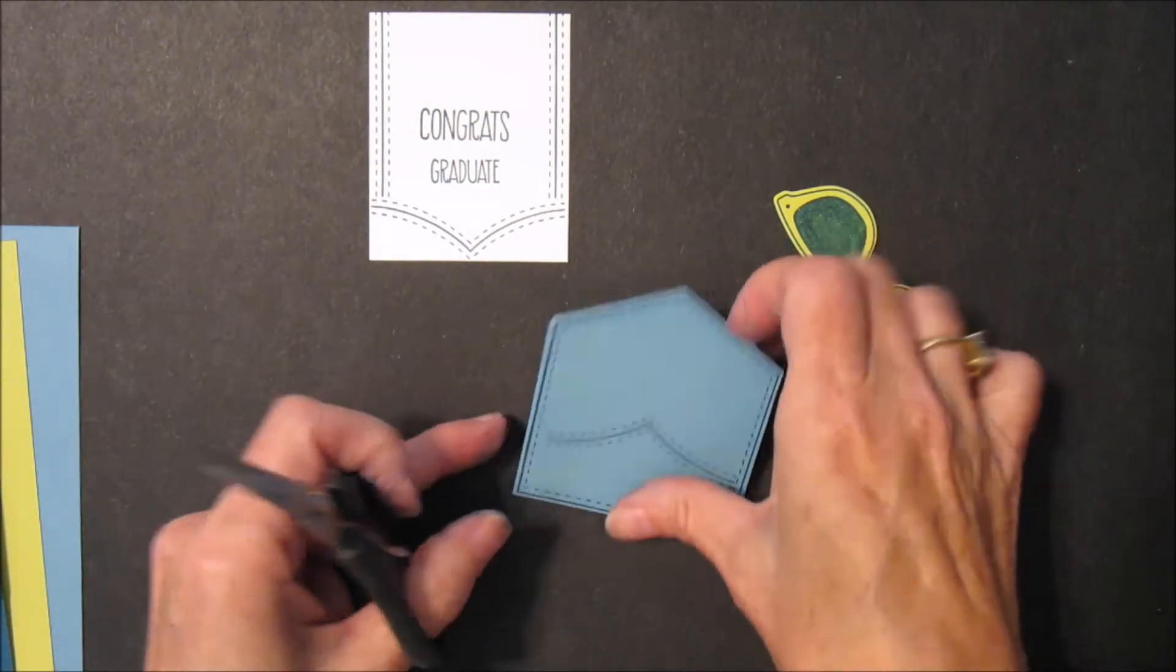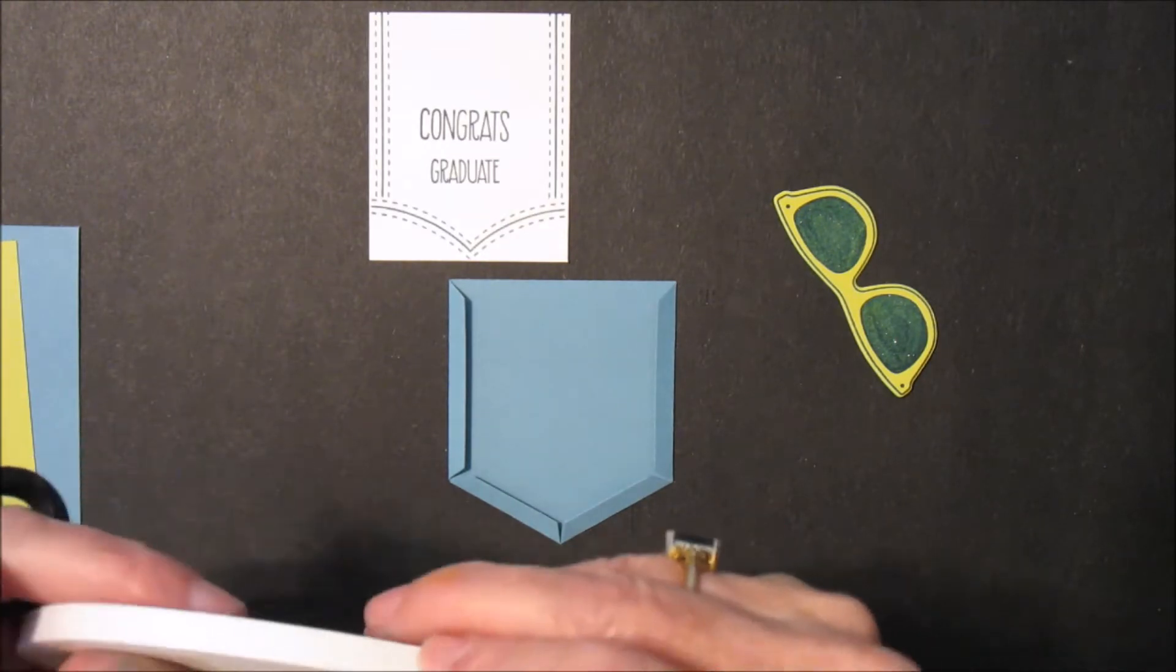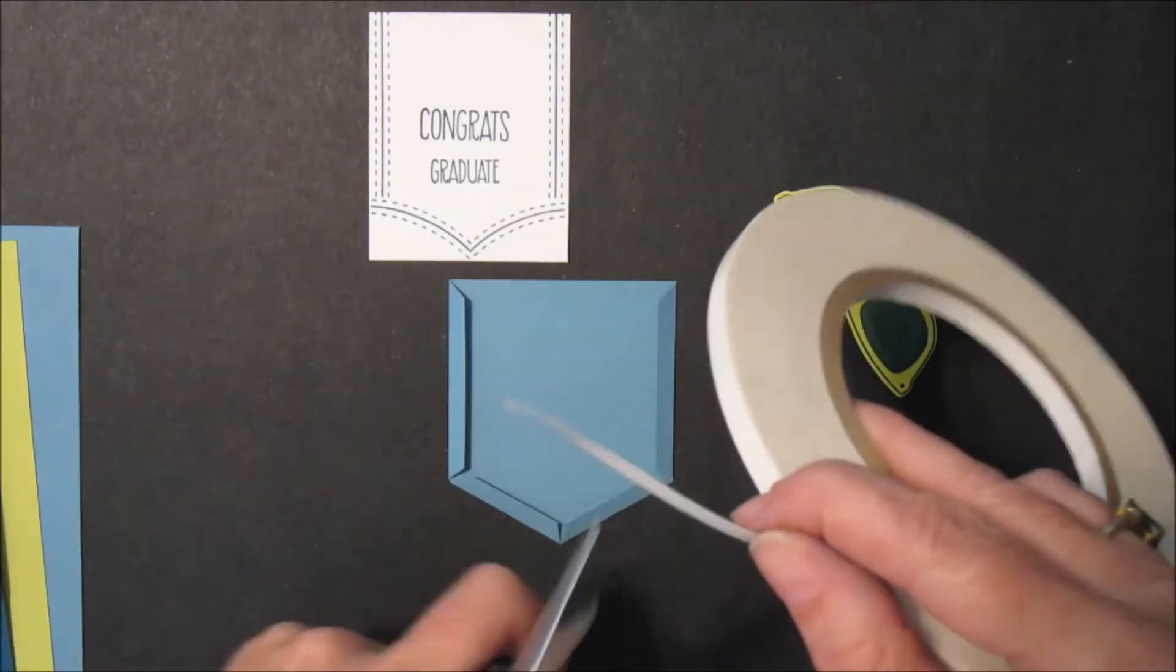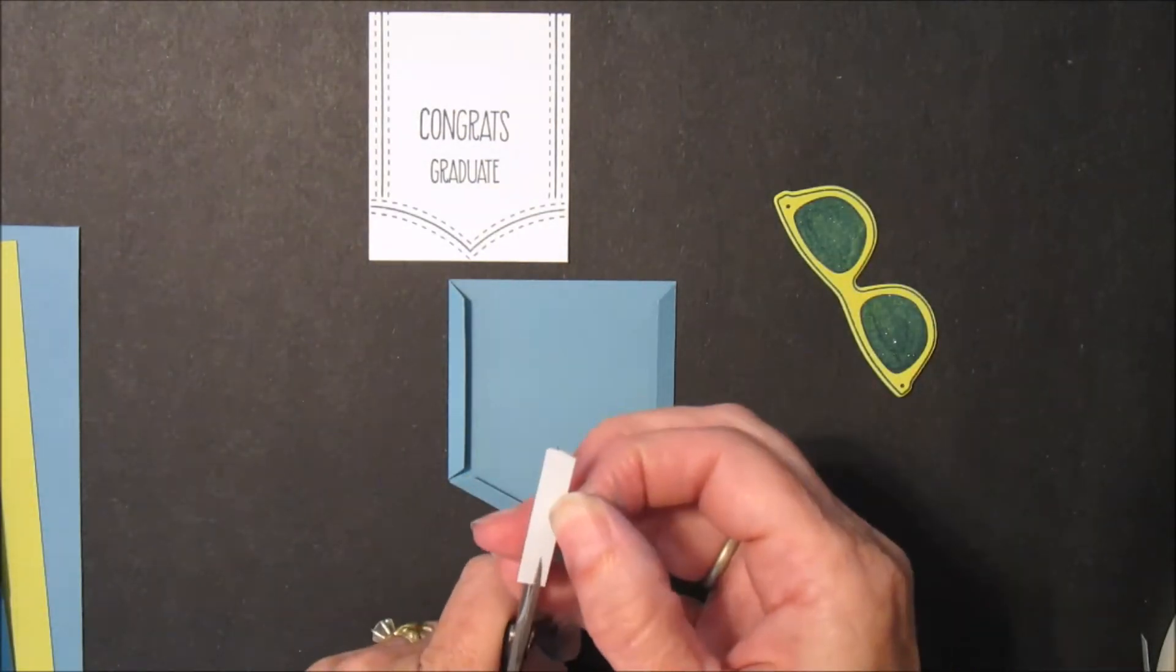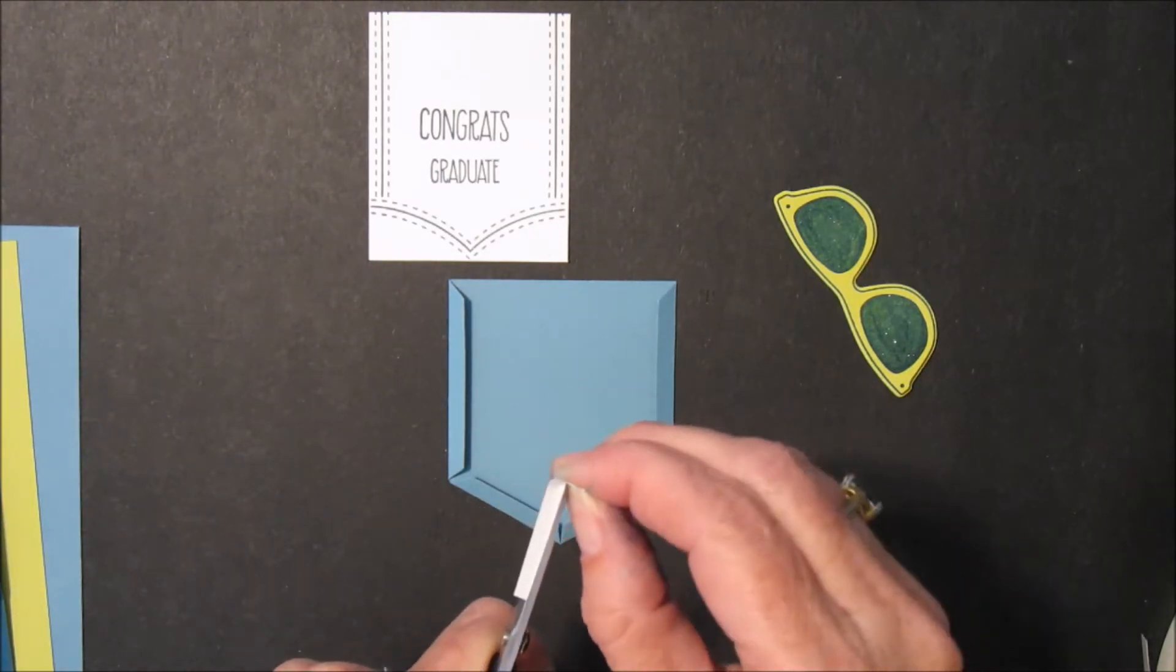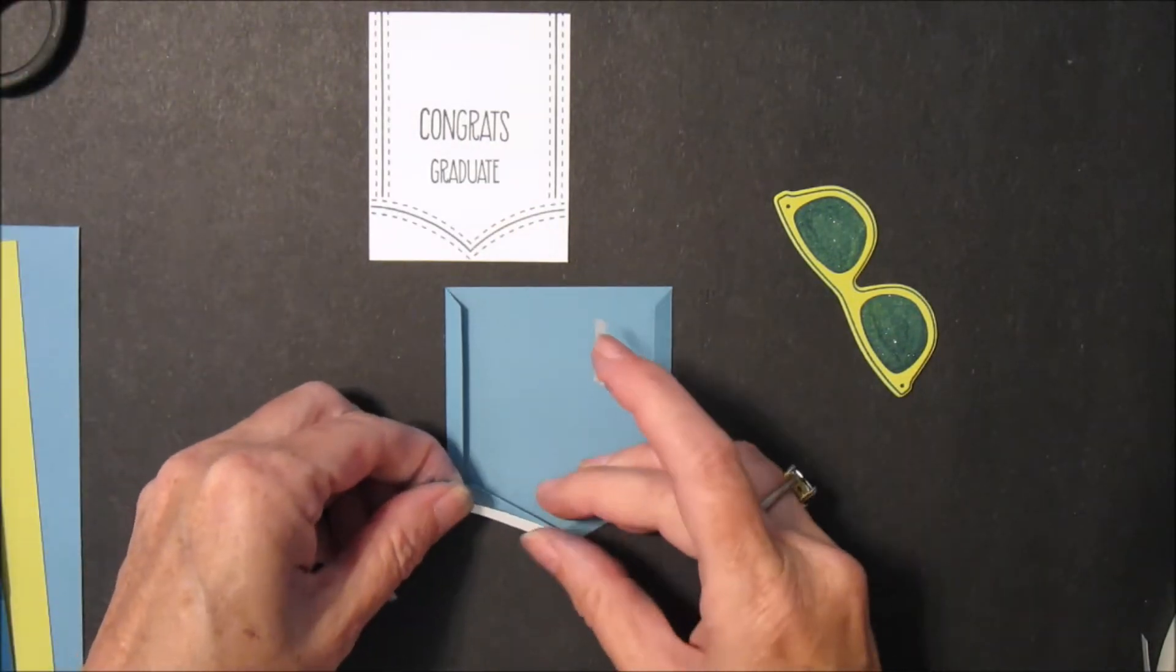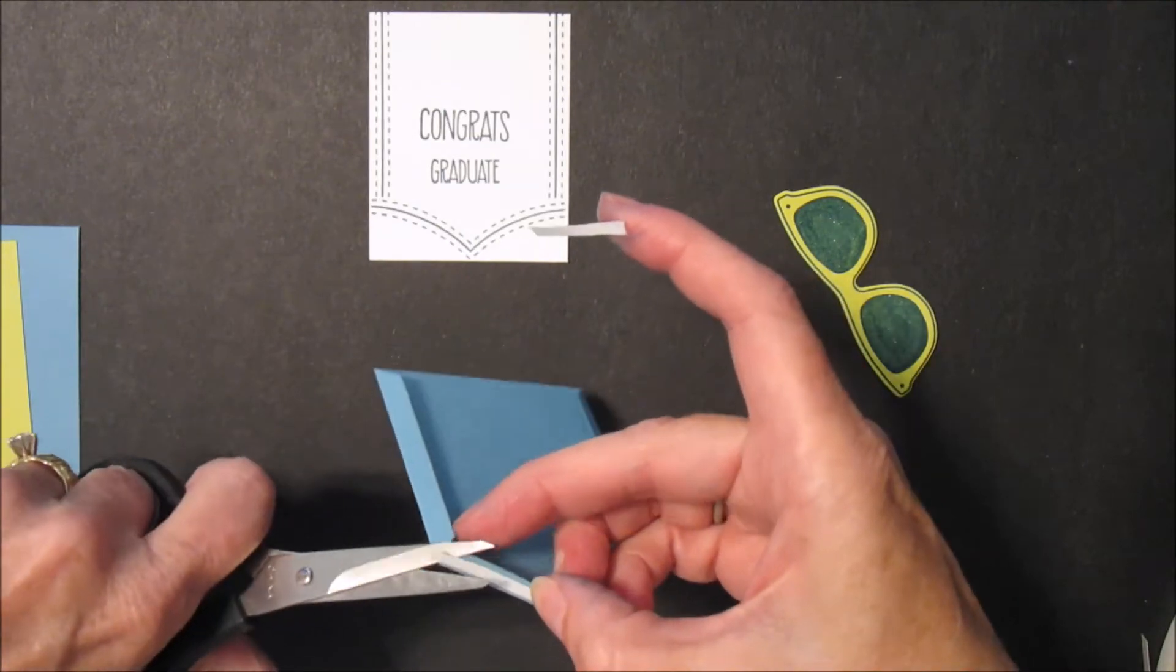And then on the back on these little areas I took my tear and tape, and cut the end here. And cut a piece, cut it in small pieces, and then cut it lengthwise as well so I could get the right length to go into these areas. And even still I need to trim a little bit.